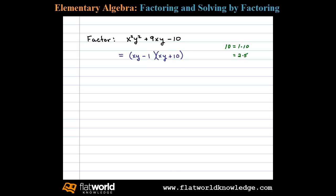Now let's check this. We check by multiplying: xy times xy is x squared y squared, xy times positive 10 leaves us with plus 10xy, negative 1 times xy is negative xy, and then finally negative 1 times positive 10 leaves us with minus 10.